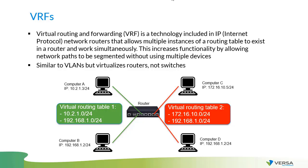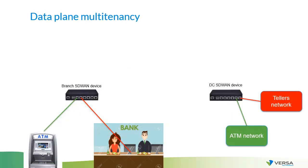Now let's see where VRFs can be applied. In our previous example with two tenants on each device — the branch device and the DC device — we can assign each tenant to its own VRF. They reside on the same physical device, but their environments are completely independent virtual routers. With the use of VRFs, multi-tenancy on each individual device becomes possible.